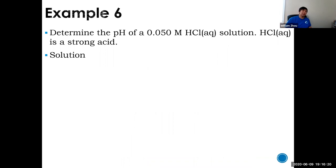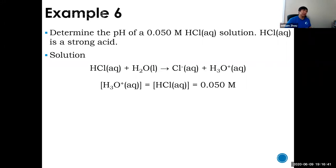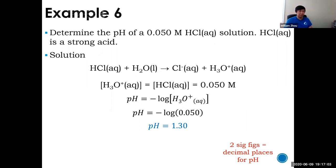Example six: determine the pH of 0.050 mol/L HCl. HCl is a strong acid that 100% ionizes, so [H₃O⁺] equals [HCl] equals 0.050 mol/L. pH equals negative log of 0.050 equals 1.30. Two sig figs, two decimals. This makes sense — HCl is highly acidic so it should have low pH.